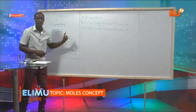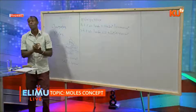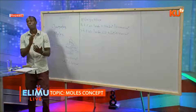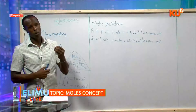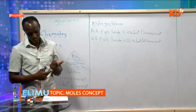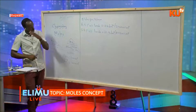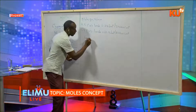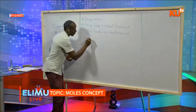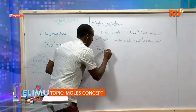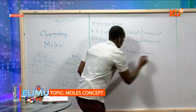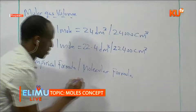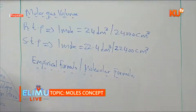Moles questions appear in paper one, sometimes paper two, and also in titration — paper three. In paper one, moles questions carry three marks. I'll now look at the first example involving empirical formula and molecular formula. Go back to your definitions to see what those two terms mean before attempting questions.